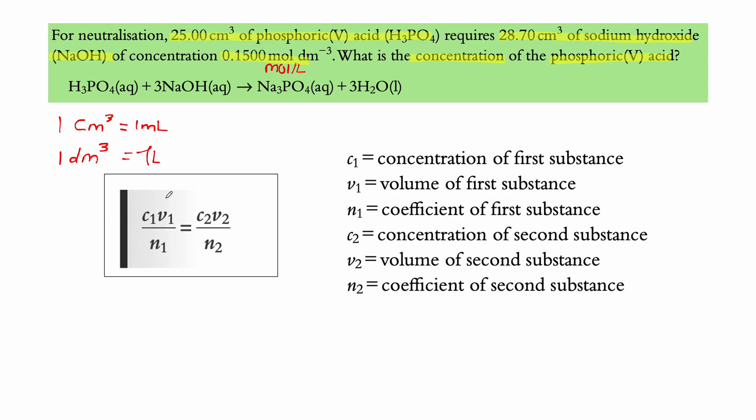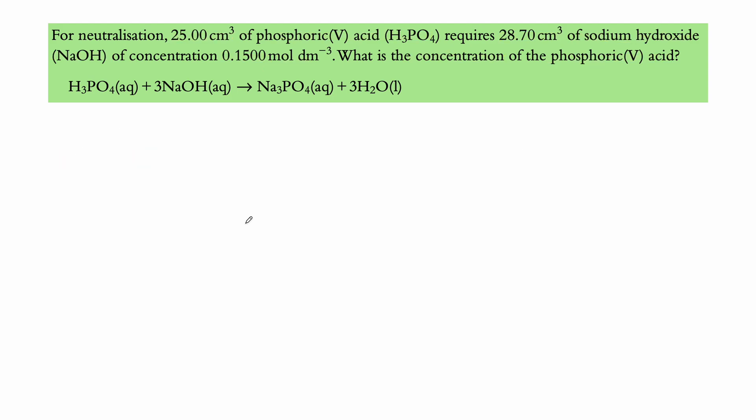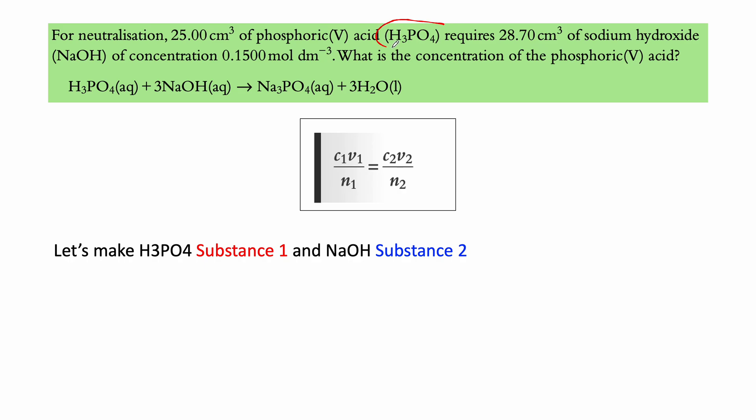We have the volume of H3PO4, right? We have n, which we can take from this formula, but I'll show you how to do that. We have the concentration of sodium hydroxide, which is here. We have the volume of sodium hydroxide, and we have n2 as well from this formula. But what we're missing is C1, and that's what we're trying to find. So again, we move this formula to our slide again, because it's very important and let's make H3PO4 substance one. So anything referring to one V1 C1 n1 refers to H3PO4, while anything referring to two refers to the NaOH.